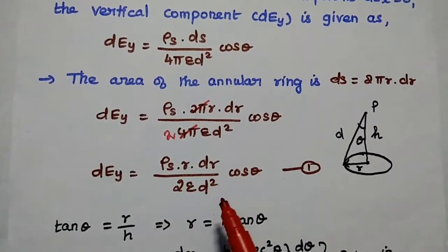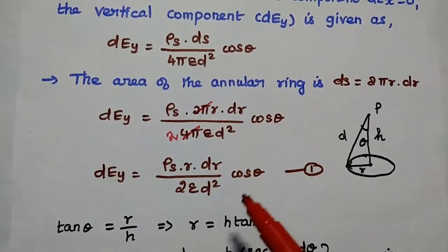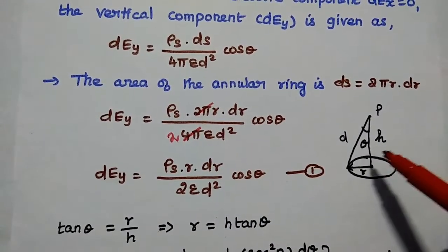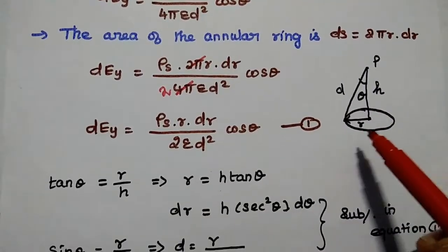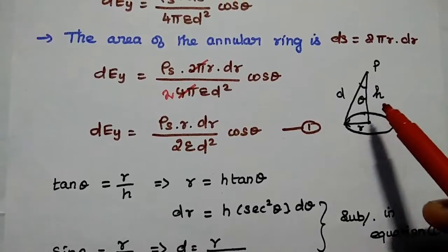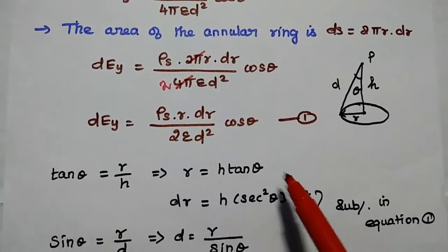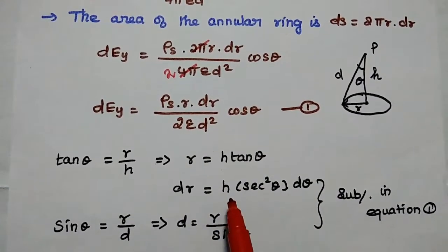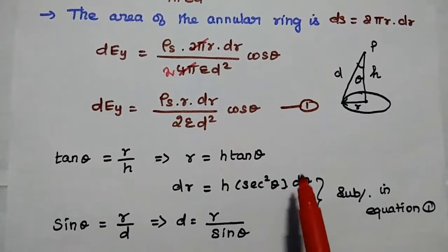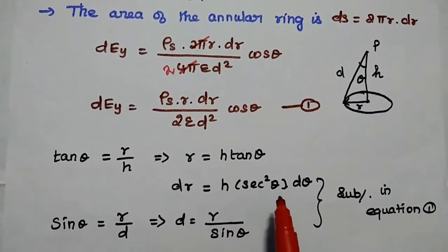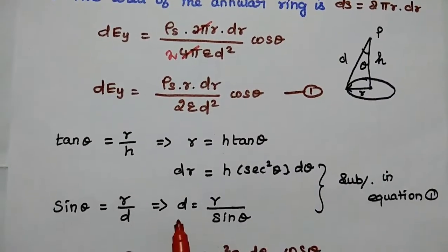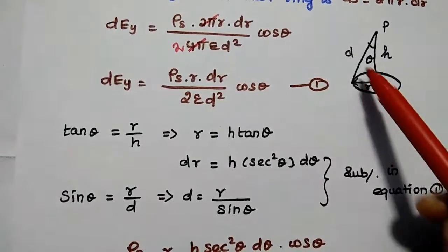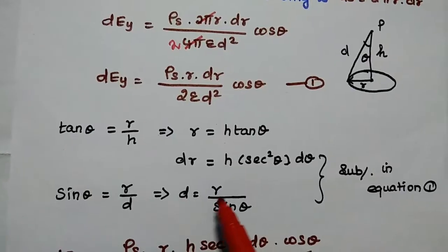Next, we simplify further by substituting the values of dr and d using the diagram. From the diagram, tan theta equals r divided by h, so r equals h · tan theta. Differentiating both sides, dr equals h · sec squared theta · d theta. To find d, we use sin theta equals r divided by d, giving d equals r divided by sin theta.